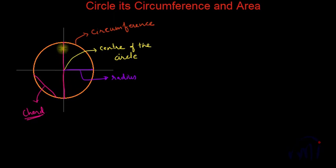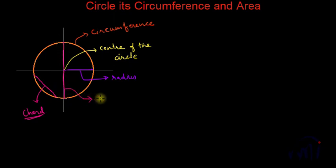That means something like this — if I draw a chord from any point on the circle through the center of the circle, that will be the longest chord. And this chord is known as the diameter of the circle.